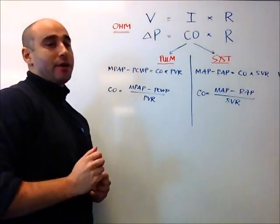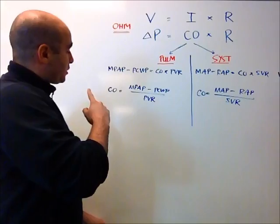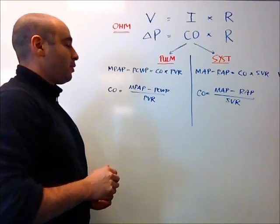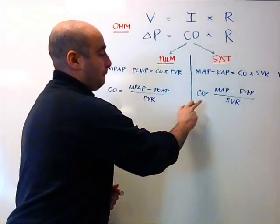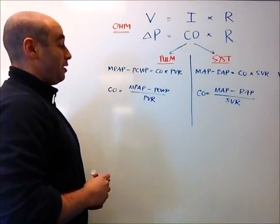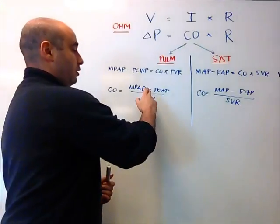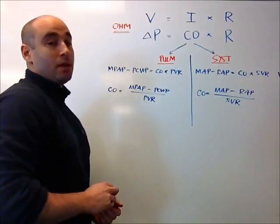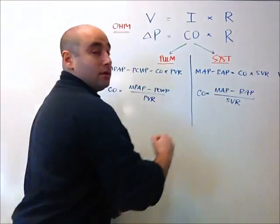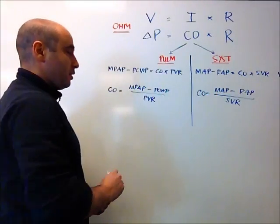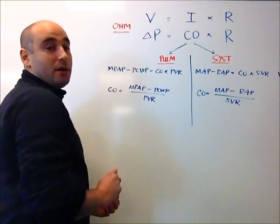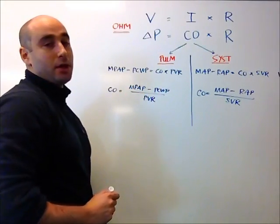So a couple general things to note about these equations. First of all, if we're trying to maximize cardiac output, there's essentially two ways that we can do it. One is by minimizing the denominator, making it as small as possible. And the other is by maximizing the numerator, making it as large as possible. The way that we'll maximize the numerator is by maximizing the delta, or the difference between these two terms, i.e. making this term as small as possible, and this term as large as possible. So let's go ahead and start doing that.